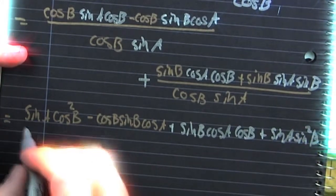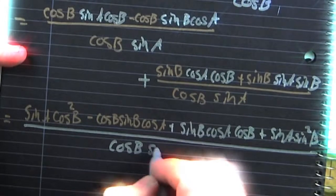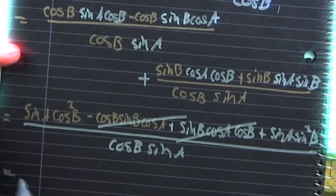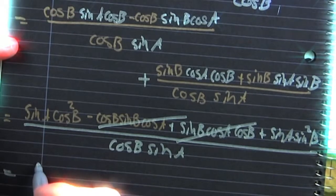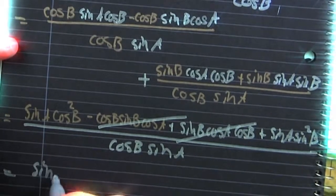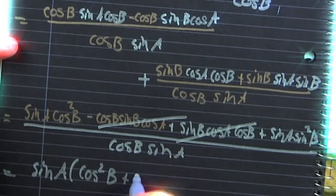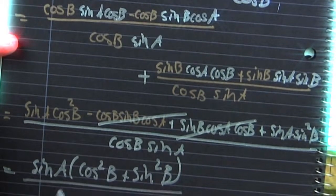Oh, look at that — all over that common denominator. Now, what do you notice in that middle term? Those are additive inverses — when added together, the sum is zero. They're gone. In the remaining part, we have a sine of A common to both of those, and we factor that out.